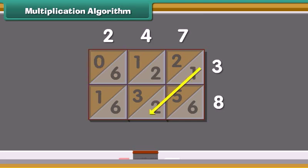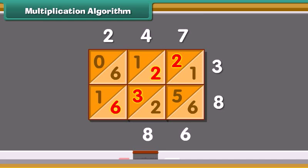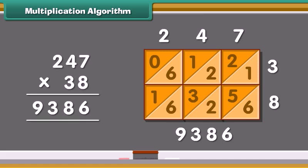Now, start at the bottom and add down the diagonal strips. Write 6 as it is. 2 plus 5 plus 1 is 8. 6 plus 3 plus 2 plus 2 is 13. We get a 2-digit answer. So, we just write 3 below and carry 1 in the next strip. 1 plus 6 plus 1 is 8. Add 1 carry to the answer. We get 9. And 0 is 0. We get the answer: 0, 9, 3, 8, 6. Thus, we have the answer of 247 into 38 as 9386.